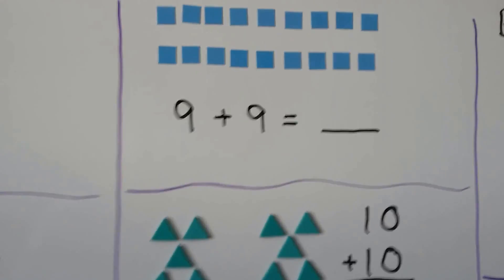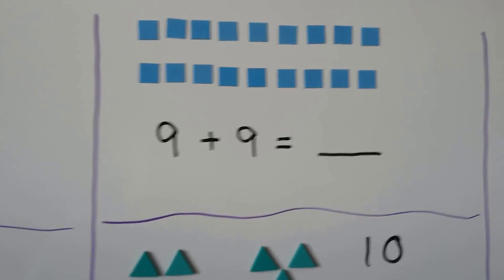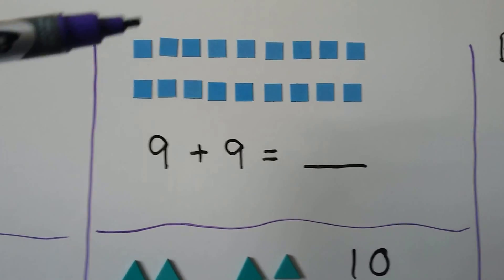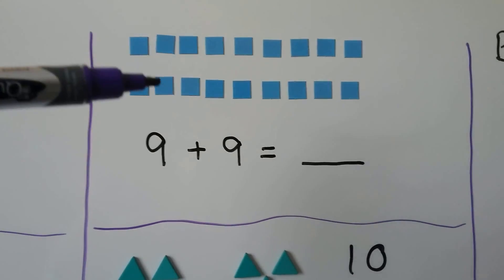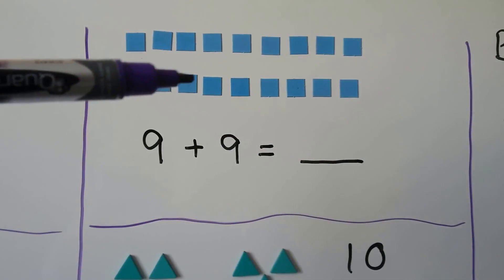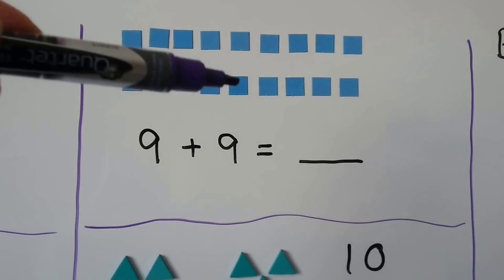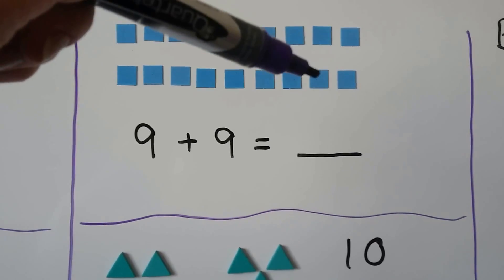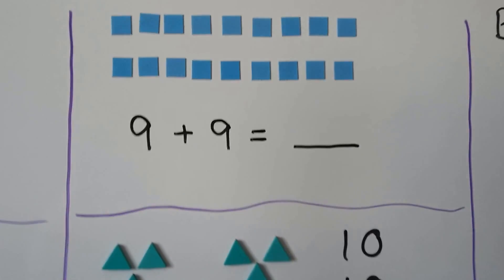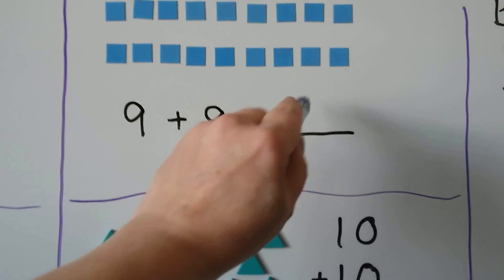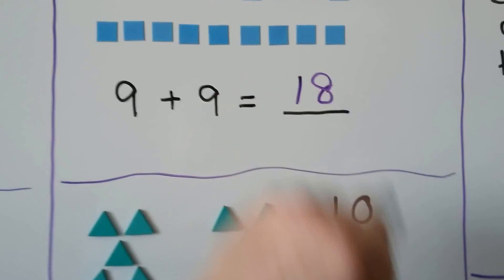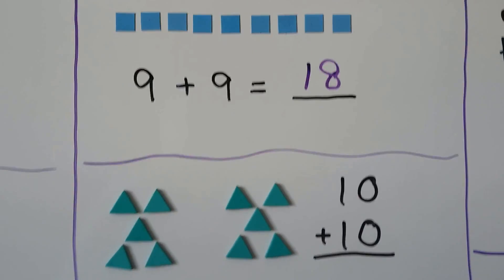We have 9 plus 9. We can count on from 9: 10, 11, 12, 13, 14, 15, 16, 17, 18. So 9 plus 9 is equal to 18.